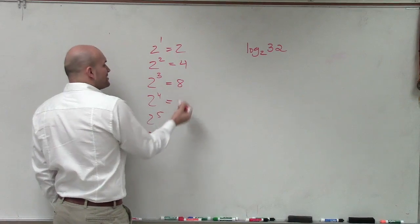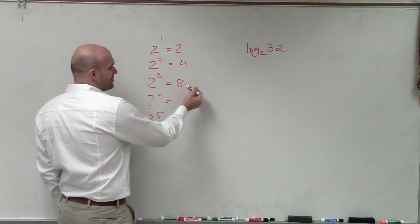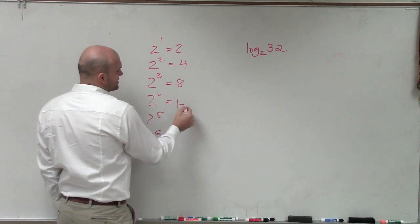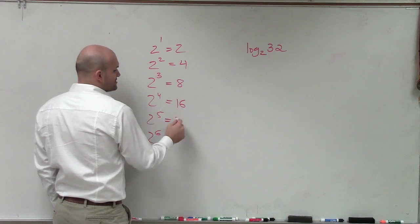2 raised to the fourth power - what you're doing is taking your previous number and multiplying by 2. So that's going to be 16. 16 times 2 would be 32.